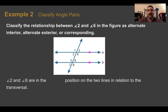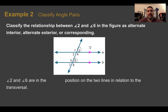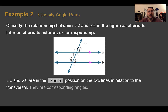Example two — classify angle pairs. Classify the relationship between angle two and angle six as alternate interior, alternate exterior, or corresponding. Let's find angle two and angle six. They are on the same side of the transversal — both on the right side — and in the same position in relation to the transversal. So these must be corresponding angles.